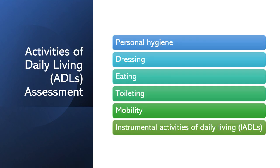Activities of daily living are the basic self-care tasks that individuals perform on a daily basis to maintain independence. In Parkinson's disease, motor symptoms such as bradykinesia, rigidity, and postural instability can significantly impact a person's ability to perform ADLs. Assessment of personal hygiene includes tasks such as bathing, grooming, brushing hair or shaving, and oral care. Assess the patient's ability to independently perform these tasks, including any difficulties with fine motor skills, coordination, or balance. For dressing, assess the patient's ability to put on and take off clothing independently, including buttons, zippers, and fasteners, noting any difficulties with dexterity or coordination. For eating, assess the patient's ability to handle utensils, cut food, and feed themselves, noting any difficulties with tremors, rigidity, or bradykinesia.